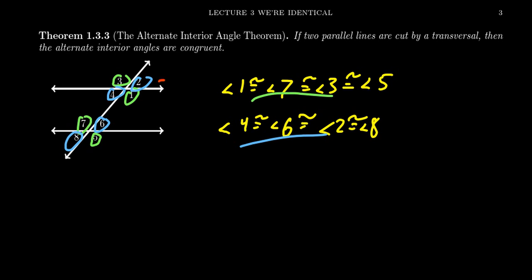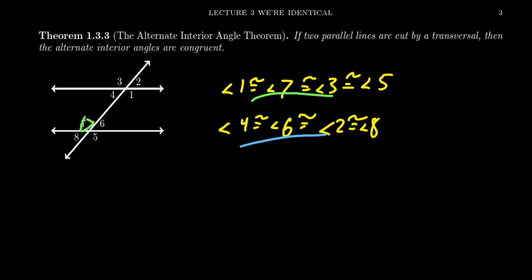The angles that aren't congruent to each other are going to be supplementary. Angles one and two are supplementary, two is supplementary to three, and by transitivity two is also supplementary to seven and five. So when you have these diagrams by the alternate interior angle theorem, either the angles are congruent or they're supplementary — those are the only options. I should also mention that the converse of the alternate interior angle theorem applies: if you have a pair of alternate interior angles that are congruent, then the lines must be parallel. The congruence of alternate interior angles is equivalent to the lines being parallel to each other.